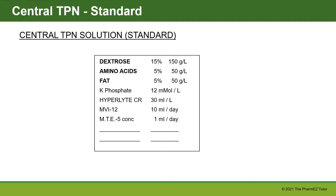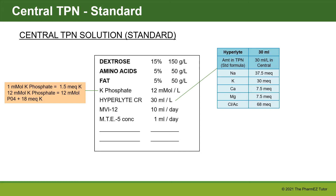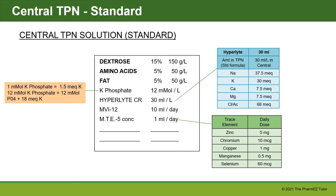When starting TPN, use the standard formulas first. Here's an example of a standard central TPN formula: macronutrients are dextrose 15%, amino acid 5%, and fat 5%. Potassium phosphate 12 millimoles per liter is added — note that potassium phosphate contains 1.5 mEq of potassium per 1 millimole of phosphate. Electrolytes are listed per liter, while vitamins and trace elements are listed per day. Hyperlite multi-electrolyte solution 30 mL per liter is added, containing sodium, potassium, calcium, magnesium, and chloride and acetate. Trace element 5 concentrate provides the daily dose of all five trace elements.